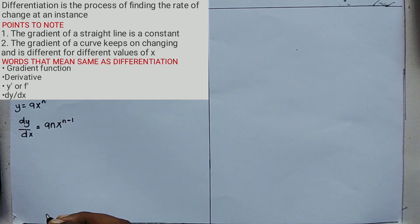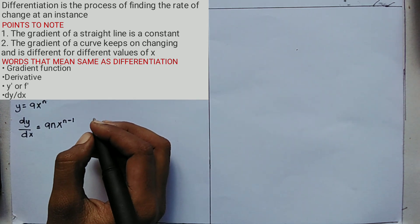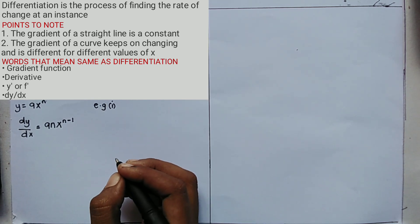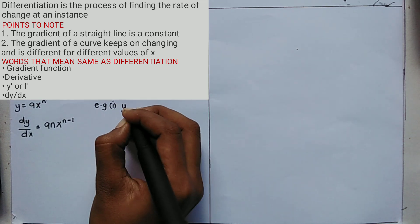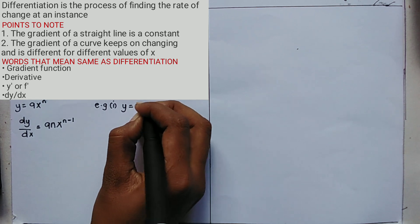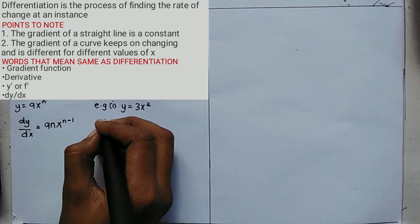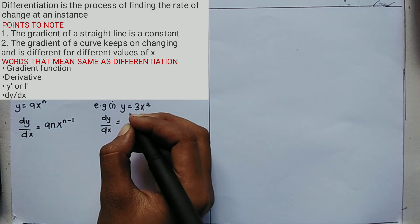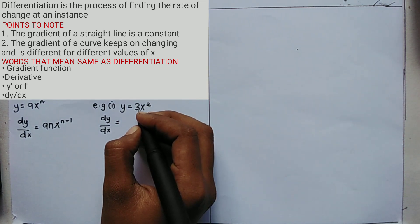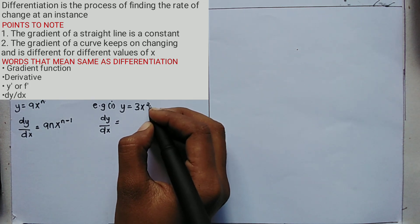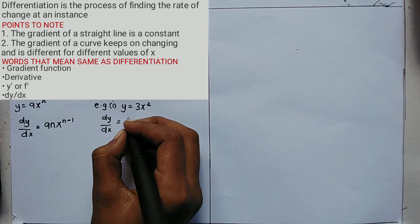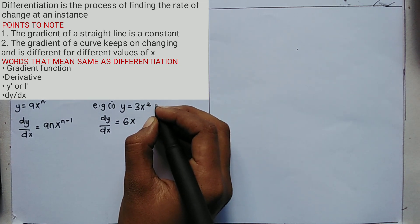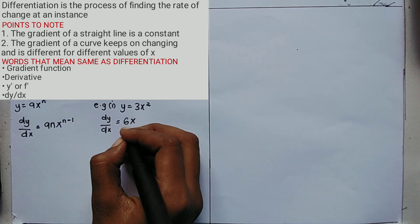As an example, you are given y = 3x² and told to differentiate. So dy/dx equals: multiply the coefficient 3 by the power 2, giving 6x. Then subtract 1 from the power: 2 minus 1 gives x to the power 1, which is just x. So dy/dx = 6x.